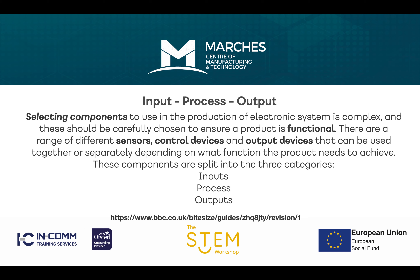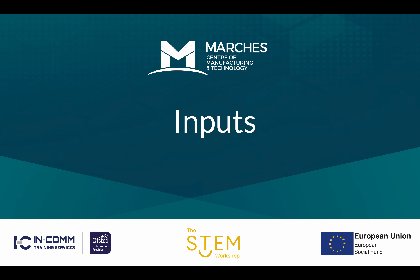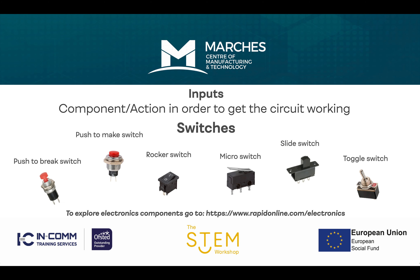There are a range of input devices, control devices, and output devices which we're going to explore. If you want to explore in more detail the knowledge and understanding of electronics, please visit the BBC Bitesize page. Now let's explore some of the inputs — what we do to an electronic system to make the electric circuit work. Some really obvious inputs are switches. Whether a switch is appropriate for this modern system depends on what the system is, and there are hundreds of different switches varying in design, style, and function.